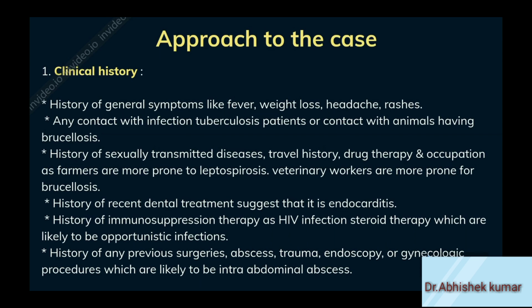Moving on to approach to the case. Firstly, clinical history: take a detailed history of general symptoms like fever, weight loss, headache, rashes. Ask for any contact with tuberculosis patients or contact with animals having brucellosis. Ask for any history of sexually transmitted diseases, travel history, drug therapy, and occupation — as farmers are more prone to leptospirosis and veterinary workers are more prone to brucellosis. History of recent dental treatments suggests infective endocarditis. History of immunosuppression therapy such as HIV infection or steroid therapy raises likelihood of opportunistic infections. History of any previous surgeries, abscess, trauma, endoscopy or gynecologic procedures raises likelihood of intra-abdominal abscess.